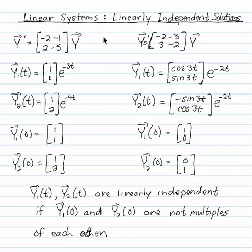For a first-order linear system, y prime equals a y, I'd like to reinforce what linearly independent solutions means. Two solutions, y1 and y2, are linearly independent if their initial conditions are linearly independent vectors. So on the left,